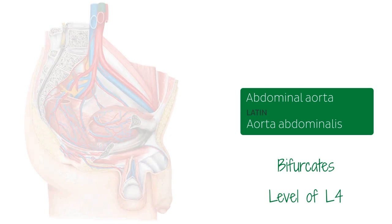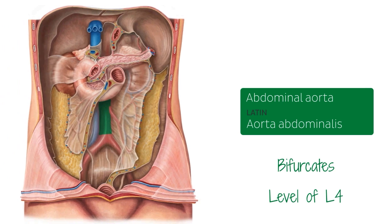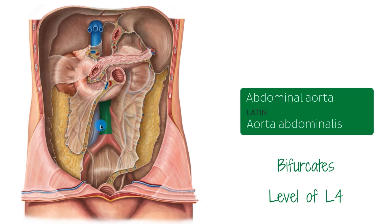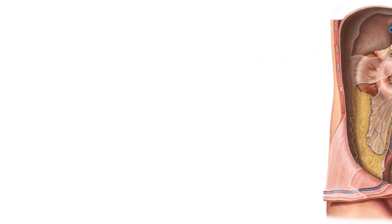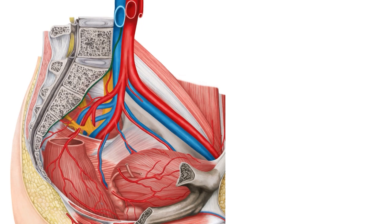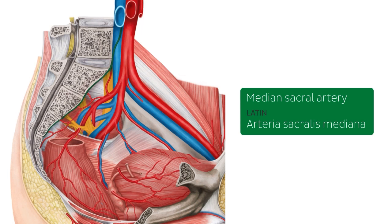I would also like to show you this image here of the interior view of the open abdomen where you can then see the highlighted abdominal aorta and notice how it bifurcates into the two common iliac arteries. Moving on to the next structure that we're going to be seeing here on the male pelvis — highlighted in green, we see now the median sacral artery. The median sacral artery is a small vessel that will be arising from the posterior side of the abdominal aorta, just superior to its bifurcation.